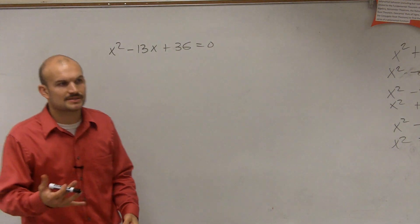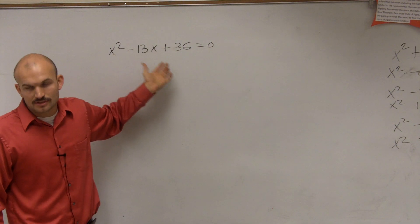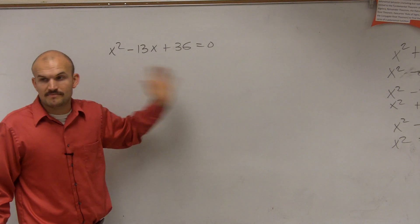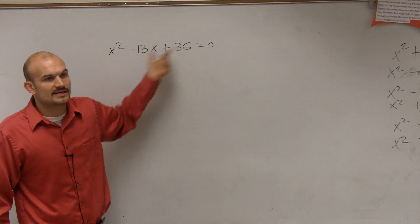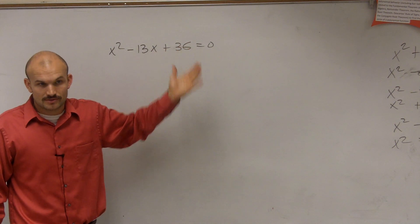Remember, when we're trying to find the solutions, we're trying to find the values of x that are going to make this equation true. That means the values of x that are going to make this side of the equation equal to 0, so both sides are equal to 0.